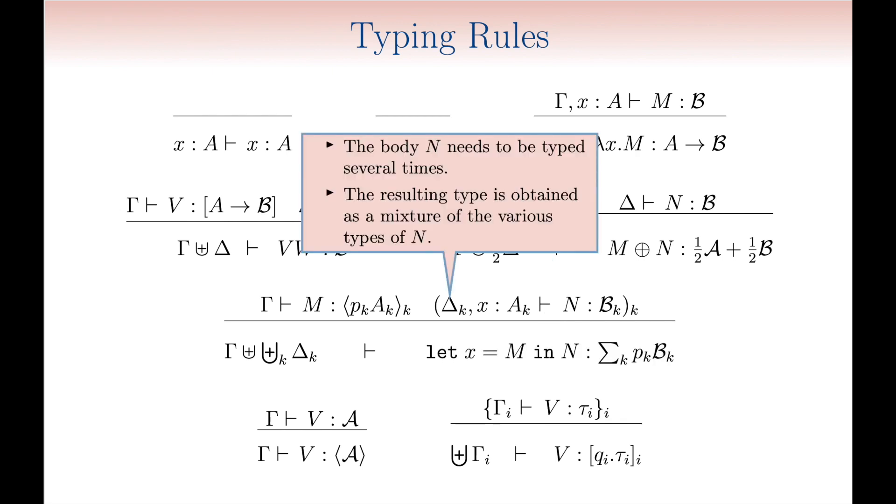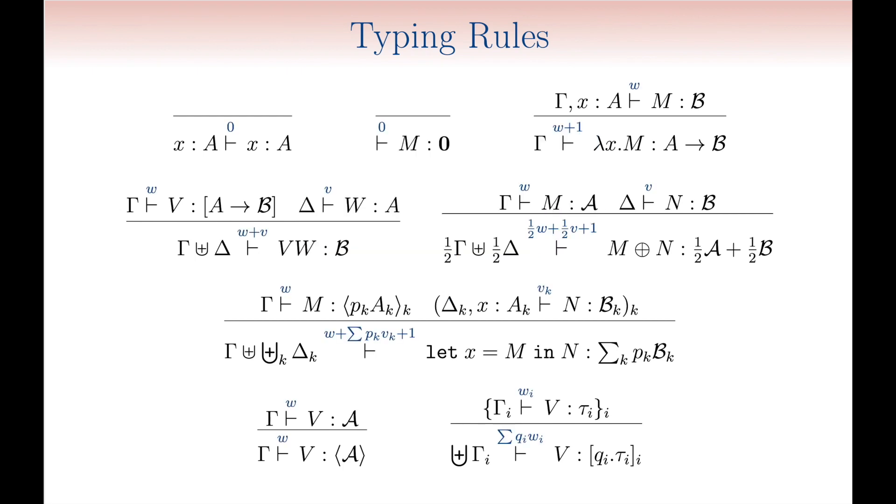The typing rule for the let construct is definitely the most complicated, but also the most interesting. The body n has to be typed many times, once for each intersection type for m. Again, the corresponding types are appropriately mixed in the conclusion.